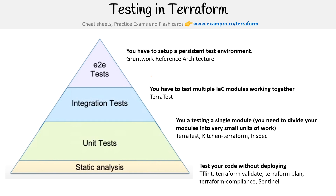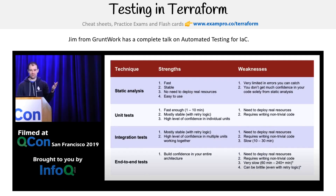End-to-end testing is very hard because you have to actually set up a persistent test network environment. But once you have one, you're going to be in really good shape. One example of a test environment — it is paid — is Gruntwork's own called the Gruntwork Reference Architecture. If you'd have to do without that, you'd have to roll your own environment. Jim from Gruntwork has a complete talk on automated testing for infrastructure as code — I strongly recommend it, as it gives you a better scope than what I can cover here.